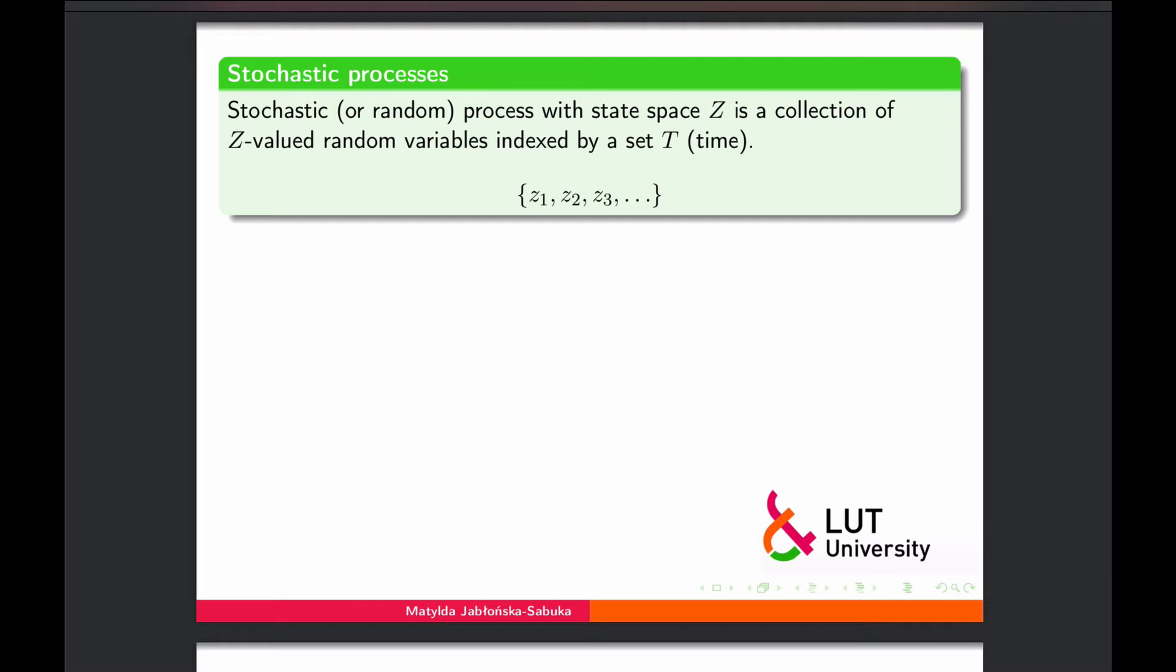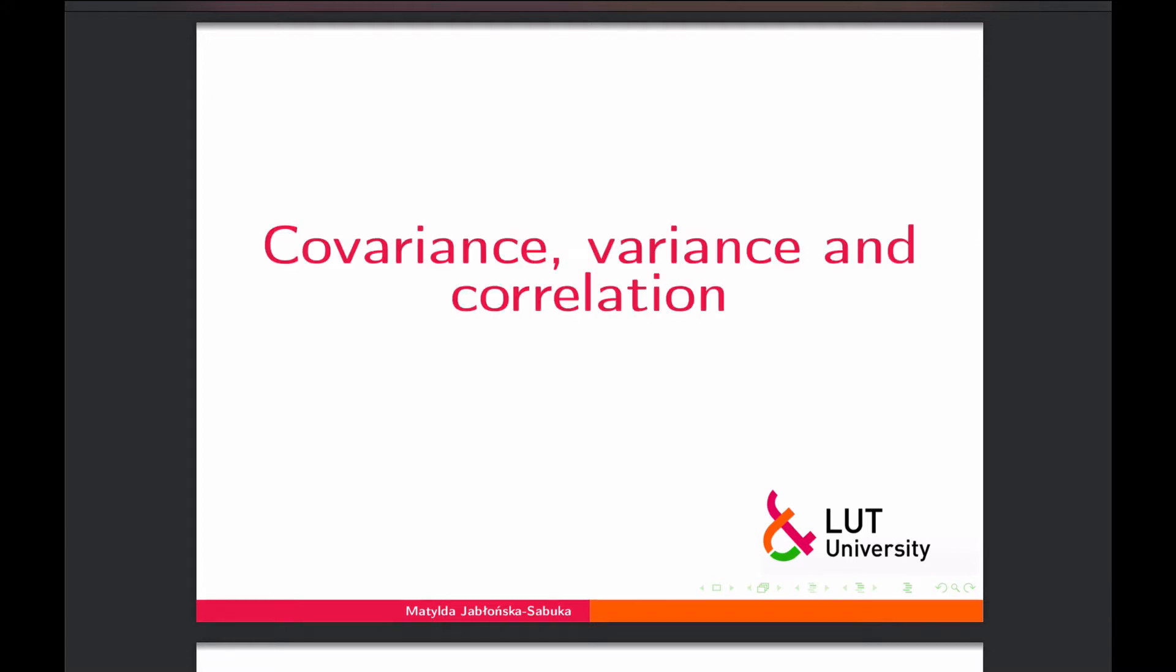So we would just have a set of values at 1, 2, 3, and so on. And very important parameters for stochastic processes are covariance, variance, and correlation.